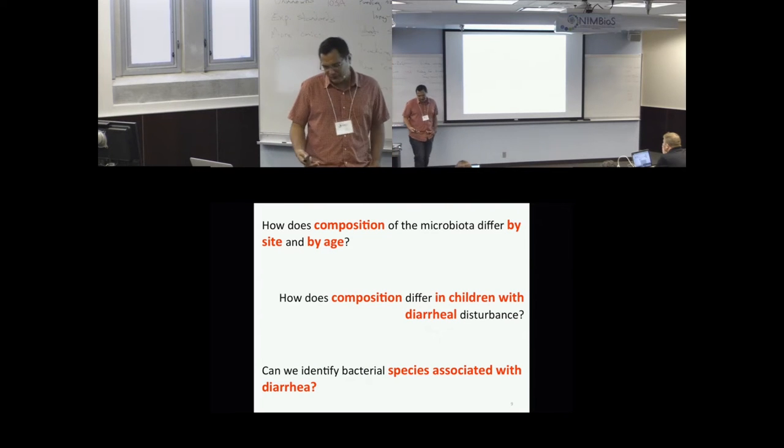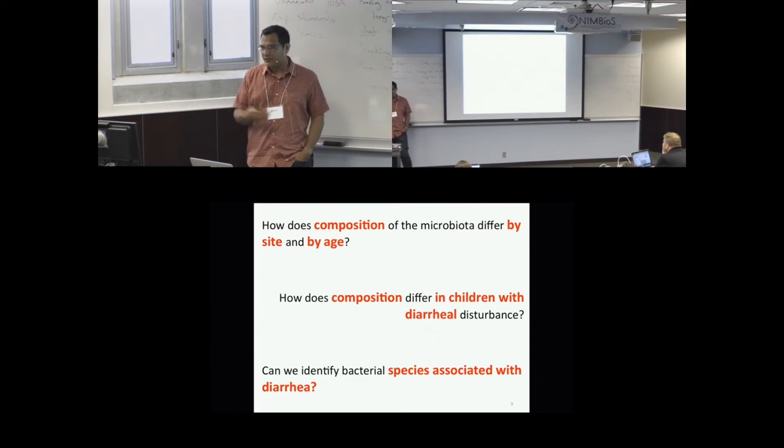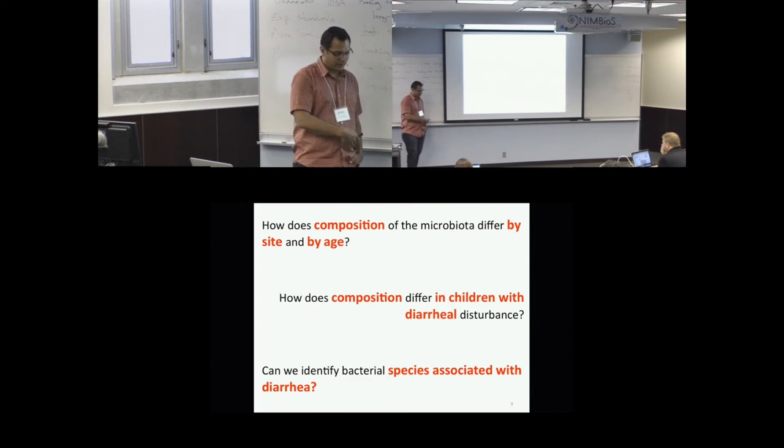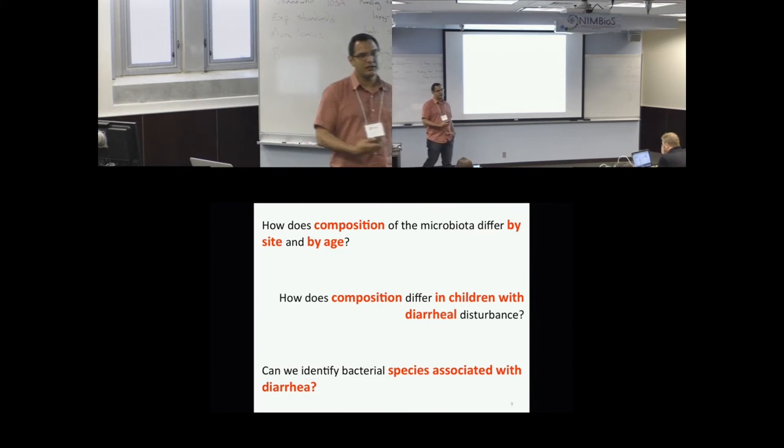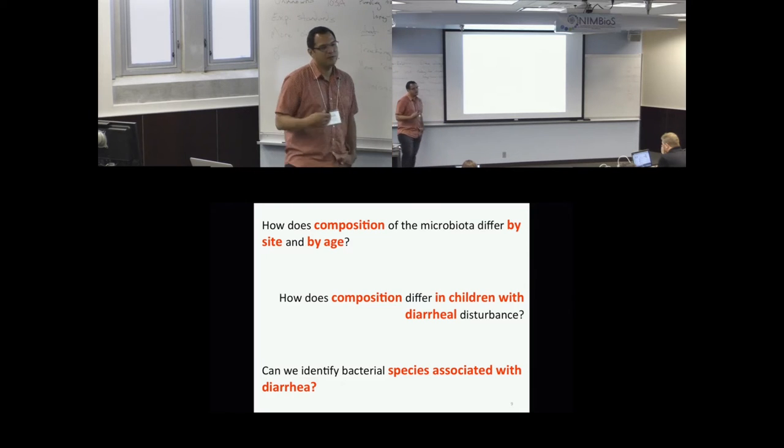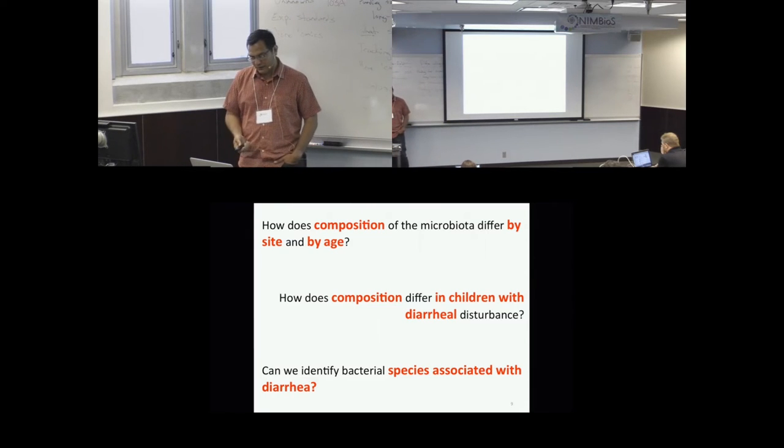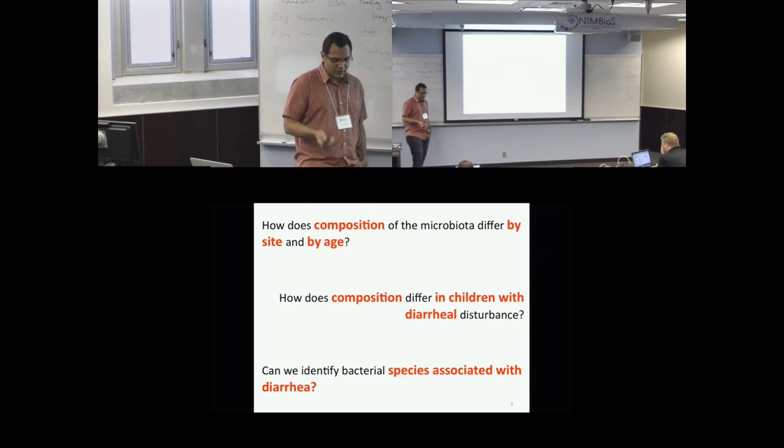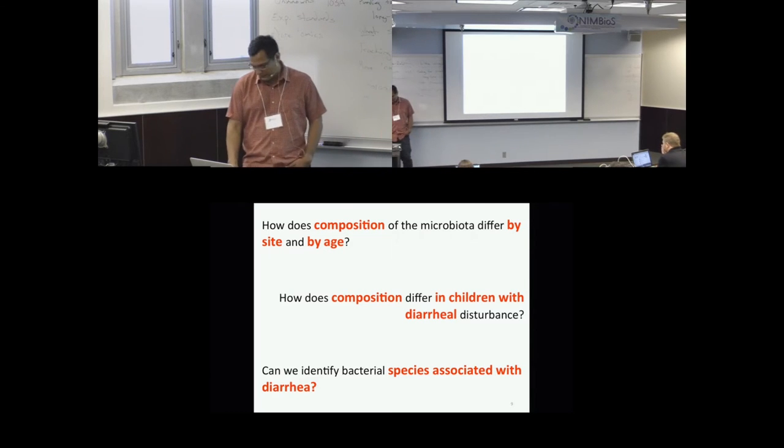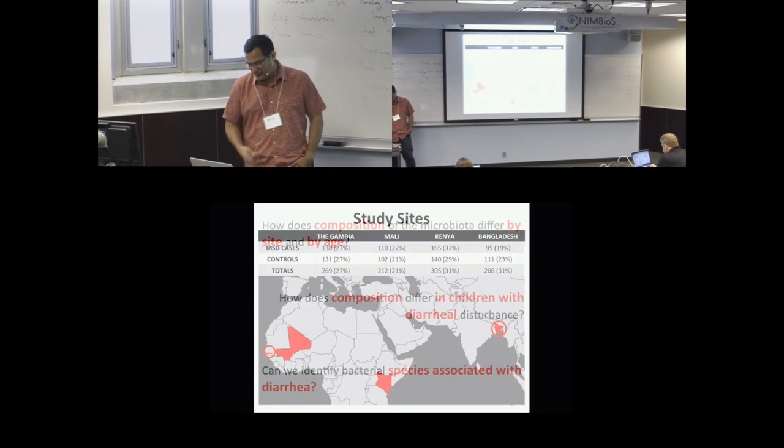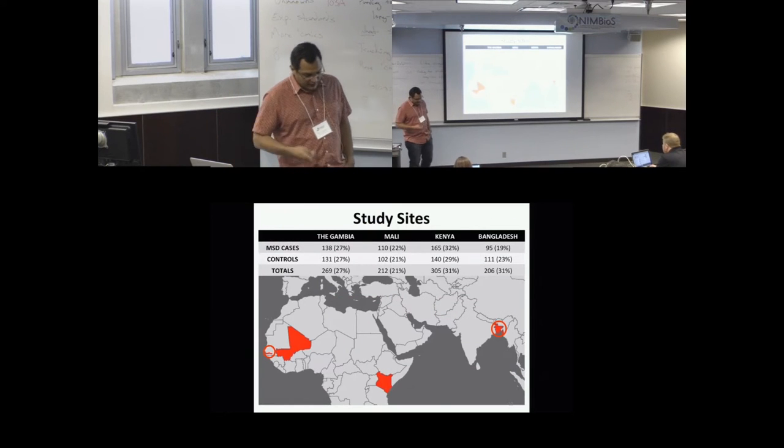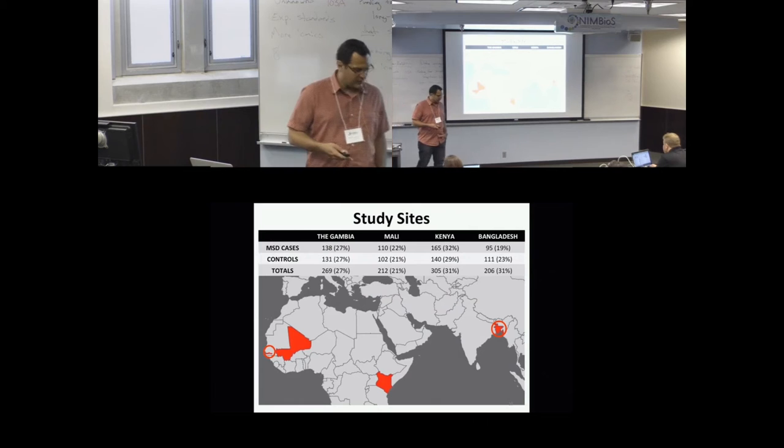We wanted to ask questions of how does composition of the microbiota differ by site, geographically and by age? How does composition differ in children with diarrheal disturbance? And can we identify specific bacterial species associated with presenting symptoms of diarrhea? So it's really quite a lovely study.